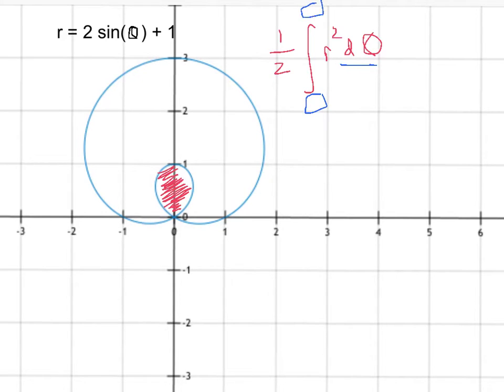We have to figure out what angles enclose this little loop in the middle. Essentially, since the loop has an r value of zero, because that's where they intersect, we need to figure out what theta makes r equal to zero.